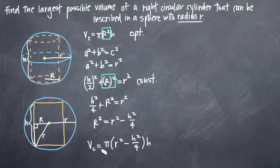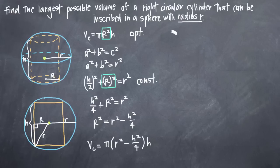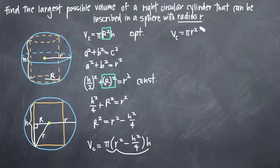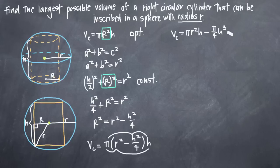Let's simplify by distributing pi and h across the terms inside the parentheses. We get the volume of the cylinder equals pi r squared h minus pi over 4 times h cubed. That's as simple as we can get our volume equation. Now we want to take the derivative of the volume equation and set it equal to zero.